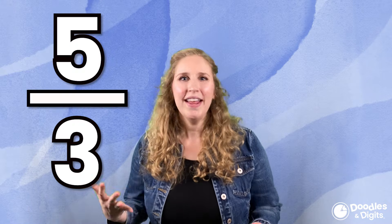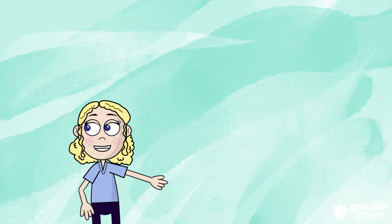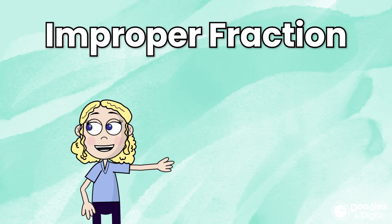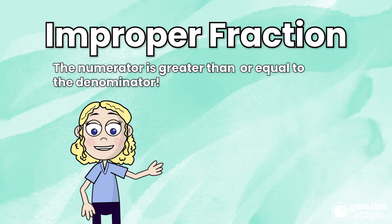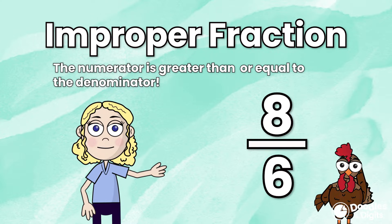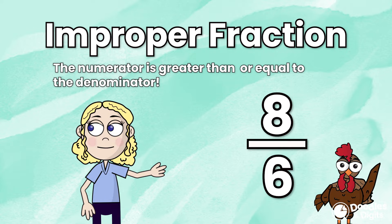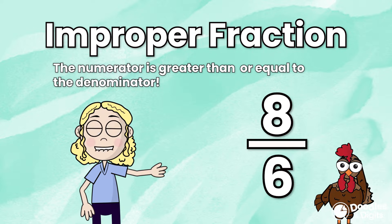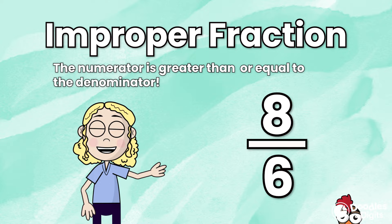All right, so what is an improper fraction or a fraction greater than one? An improper fraction is where the numerator is greater than or equal to the denominator. So let's look at this example right here.